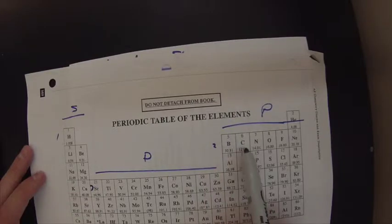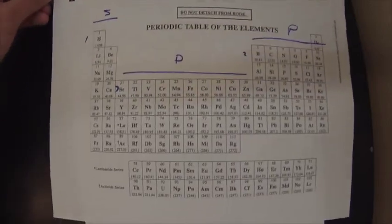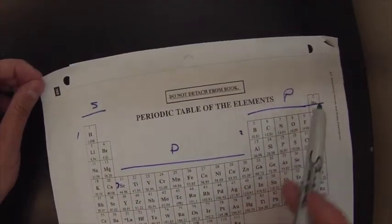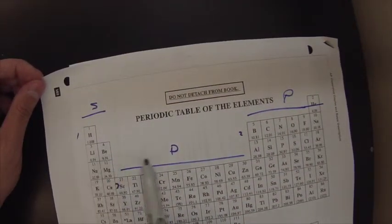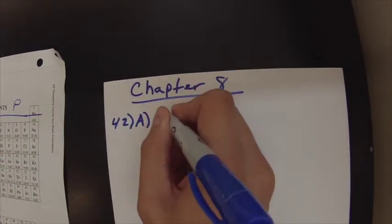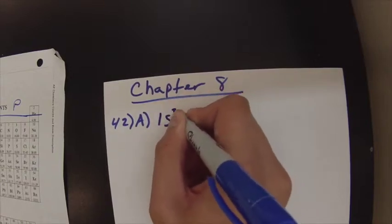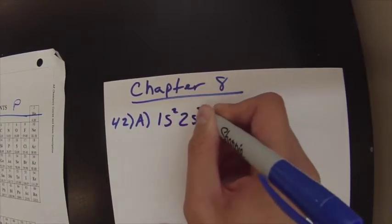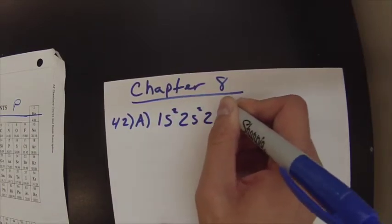So this is in 2P and it's the second one over. So what we're going to have to do here is we have to fill up the 1S, fill up the 2S, and then move into the 2P. So the answer to this one is 1S2, 2S2, 2P2.